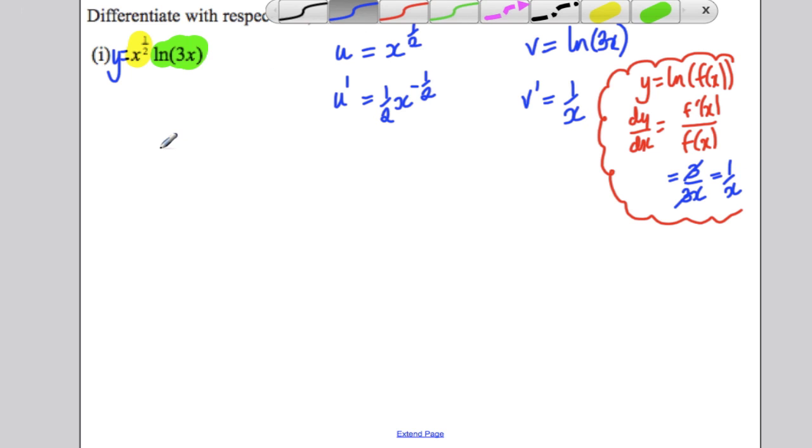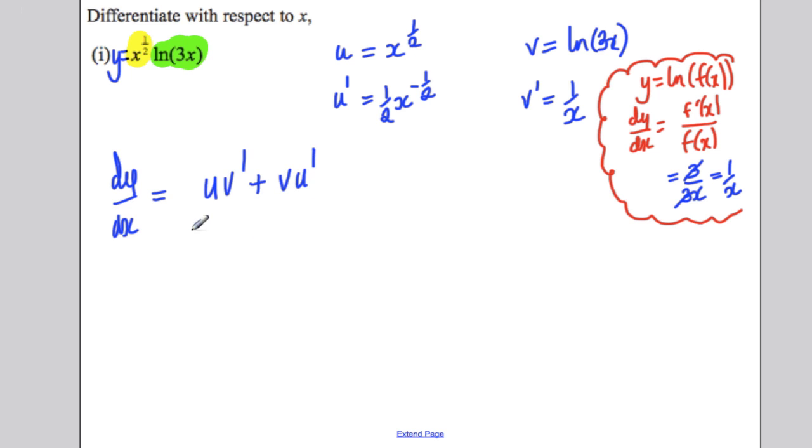Then state what rule you're using by writing out dy by dx is uv' plus vu'. That is equal to this times this, so it would be 1 over x times x to the half, add a half x to the negative a half ln of 3x. If you had left your answer like that, it would be absolutely fine. There would be no need at all to simplify it. You weren't asked to.